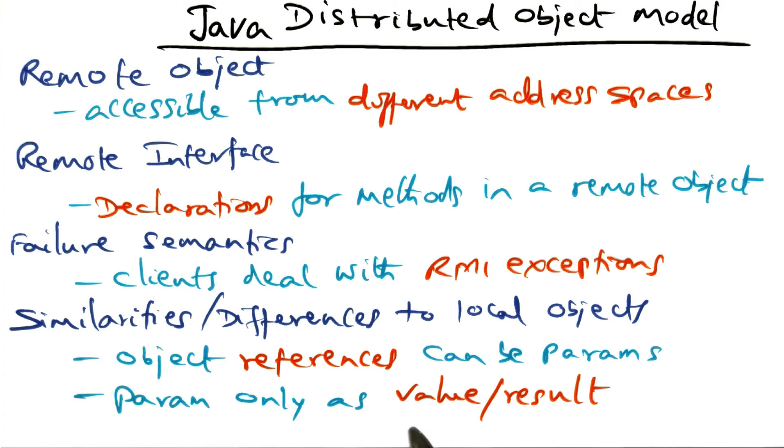But the difference is that the parameters when it is passed, it is passed as value result. That's the difference between local object and remote object. In the case of local object, when you pass an object reference as a parameter, then the method that is invoked can reach into that object that has been passed as a parameter, as a reference, and make modifications to it. And that modifications will get reflected in the original object.